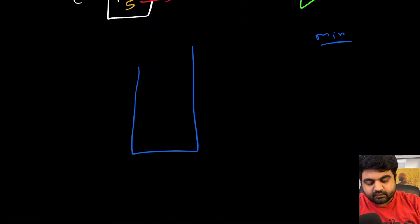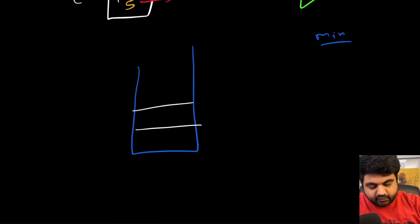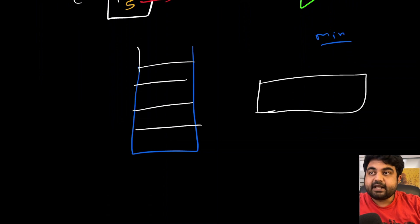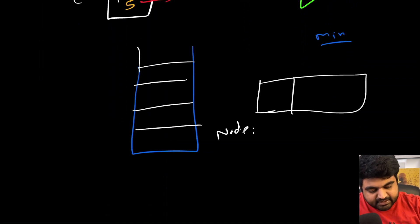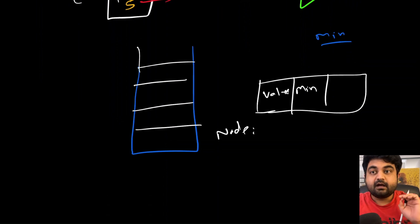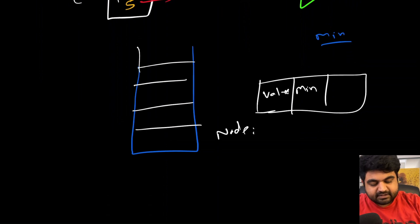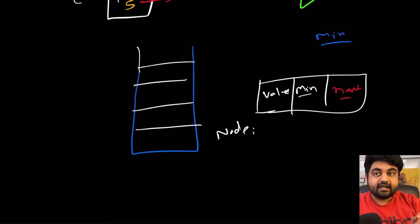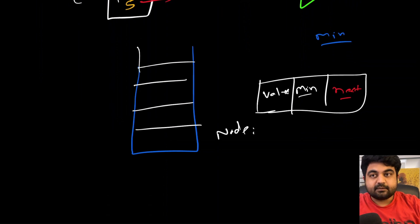To overcome this, instead of storing just a value at each position, we redesign the node to hold three things: the value itself, the minimum value up to that point in the stack, and a reference to the next node. By updating this minimum value with every entry, we can always know the current minimum in O(1) time.